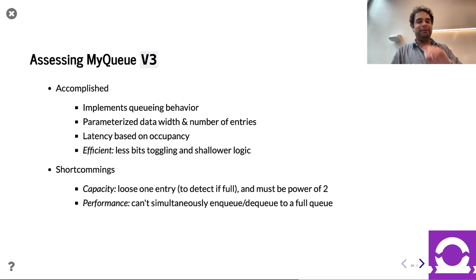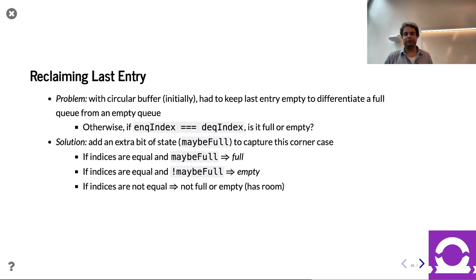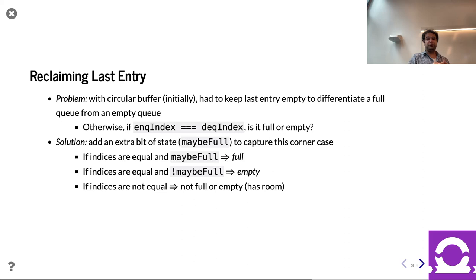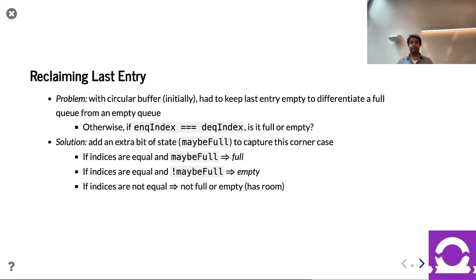Let's keep improving — that's the name of the game. Let's get that last entry back. We said we're a circular buffer and had a hard time with these two indices knowing when they're equal whether it's full or empty. Well, if your entries are say 100 bits, losing a whole entry is pretty wasteful. So what if we spend just one more bit to get the entry back? We add this extra bit of state called 'maybe full' to capture this corner case. We only check maybe full when indices are equal. If indices are equal and maybe full is true, it's full. If indices are equal and maybe full is false, it's empty. If indices are not equal, we're neither full nor empty.